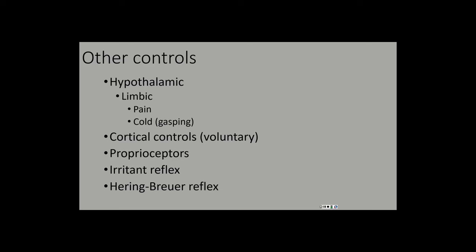The Hering-Breuer reflex is another defensive reflex to prevent lung damage — we'll demonstrate this in lab. Stretch receptors on the surface of your lungs detect when your lungs expand. When your lungs are fully inflated, those stretch receptors send inhibitory signals to the VRG, preventing it from signaling more inhalation. If stretched enough, it may even signal the VRG to trigger an exhale, preventing overinflation of the lungs.